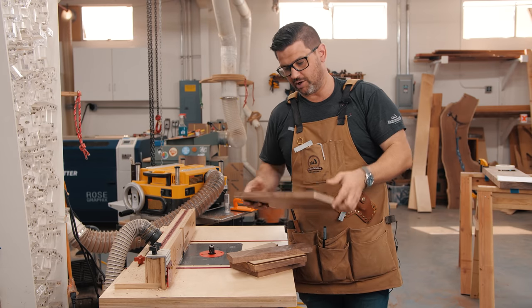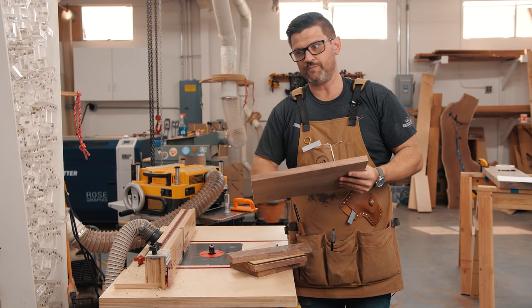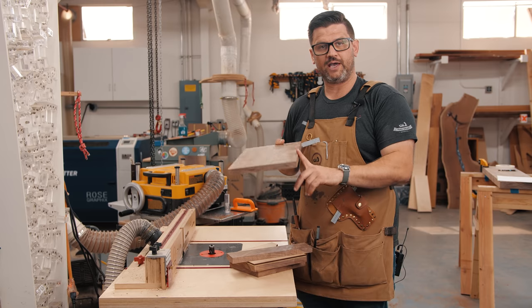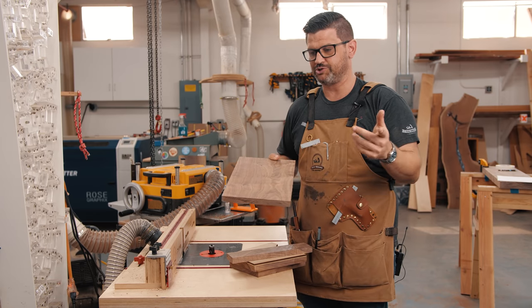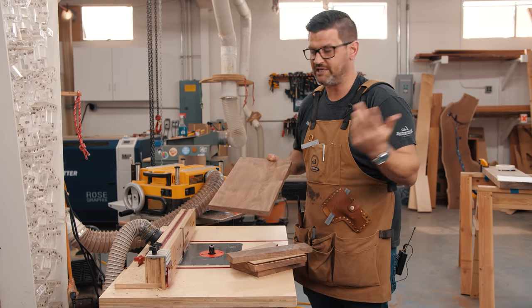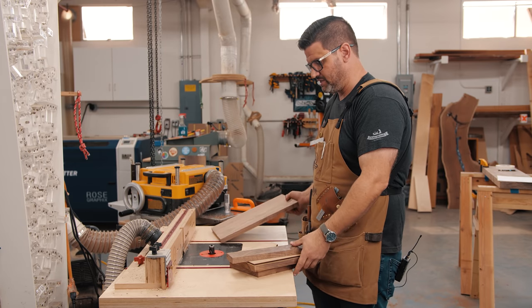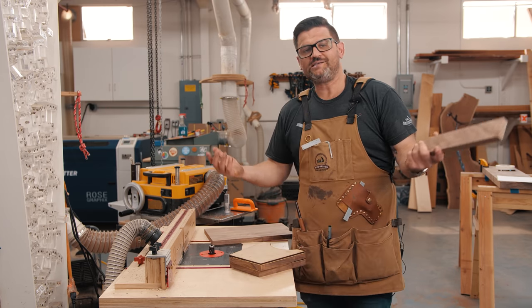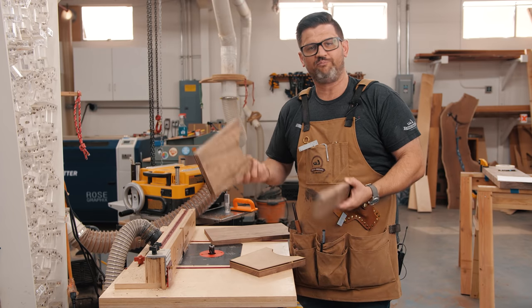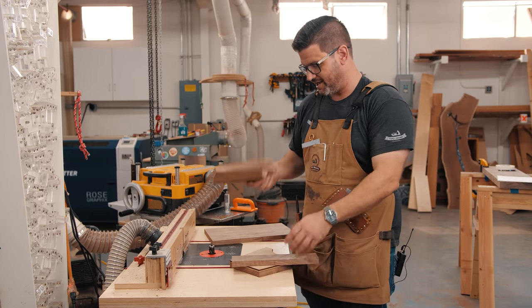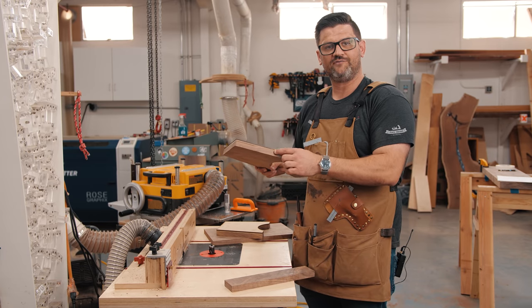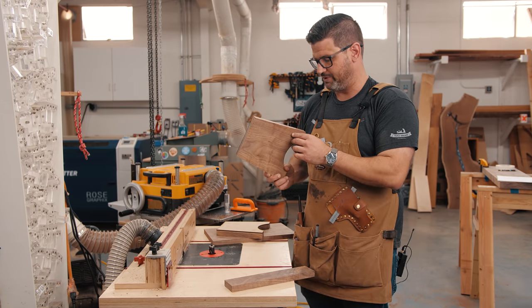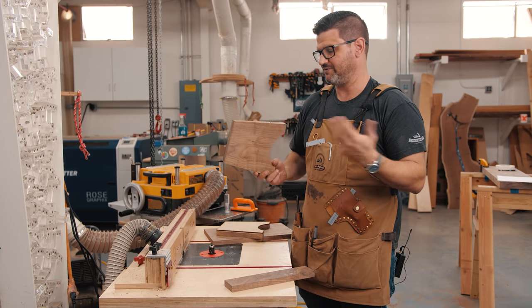Just like I always say, we don't hide our mistakes on this channel, so I've already made two. One, I cut my top too thin. It's supposed to be eight and three quarters. I misread the ruler on my table saw, so I ended up with eight and five eighths. I don't think that's going to be a big deal. And then I say it all the time, but then I'm lazy. Don't bandsaw with your templates on there. I nicked my template twice, so I got a kind of gouge right here.